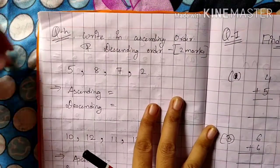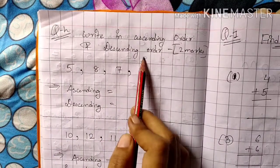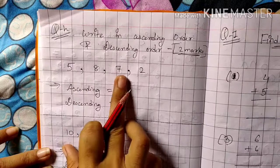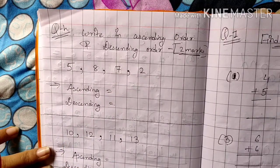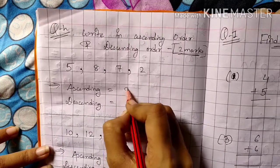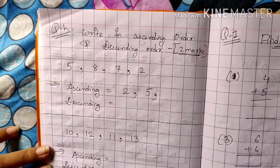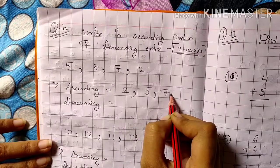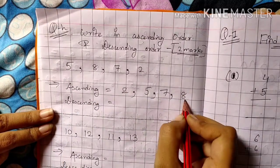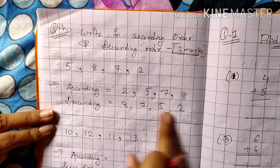Question number H: Write in ascending order and descending order — two marks. Numbers given: 5, 8, 7, 2. Ascending order means smallest to biggest. Smallest is 2, then 5, then 7, then 8. Descending order is backward — 8, 7, 5, then 2.